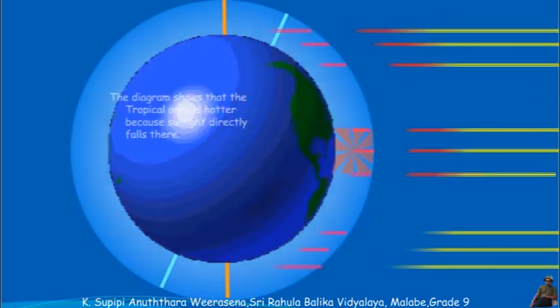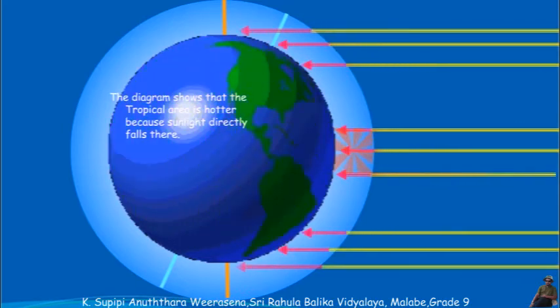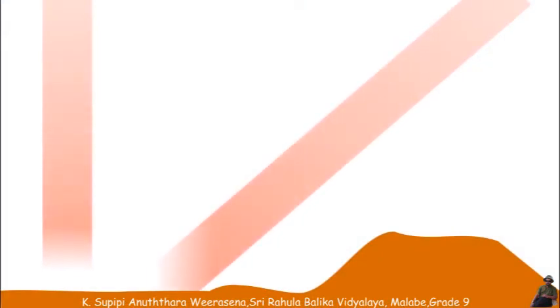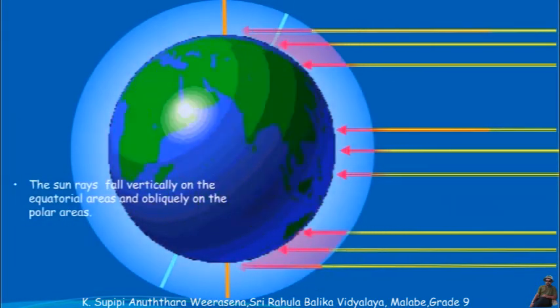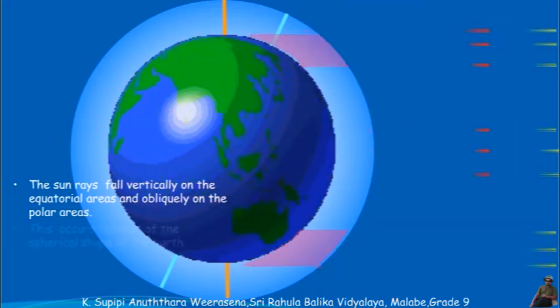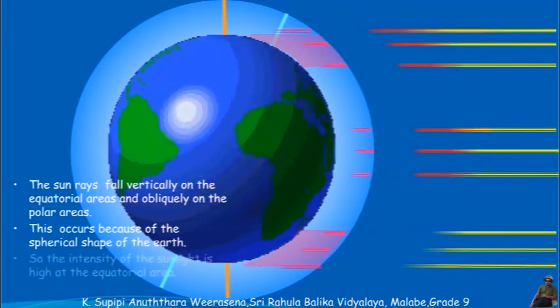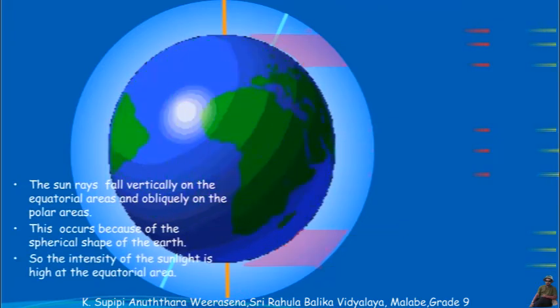This diagram shows that the tropical area is hotter because sunlight directly falls there. The sun rays fall vertically on the equatorial area and obliquely on polar areas. This occurs because of the spherical shape of the earth, so the intensity of sunlight is high at the equatorial area.